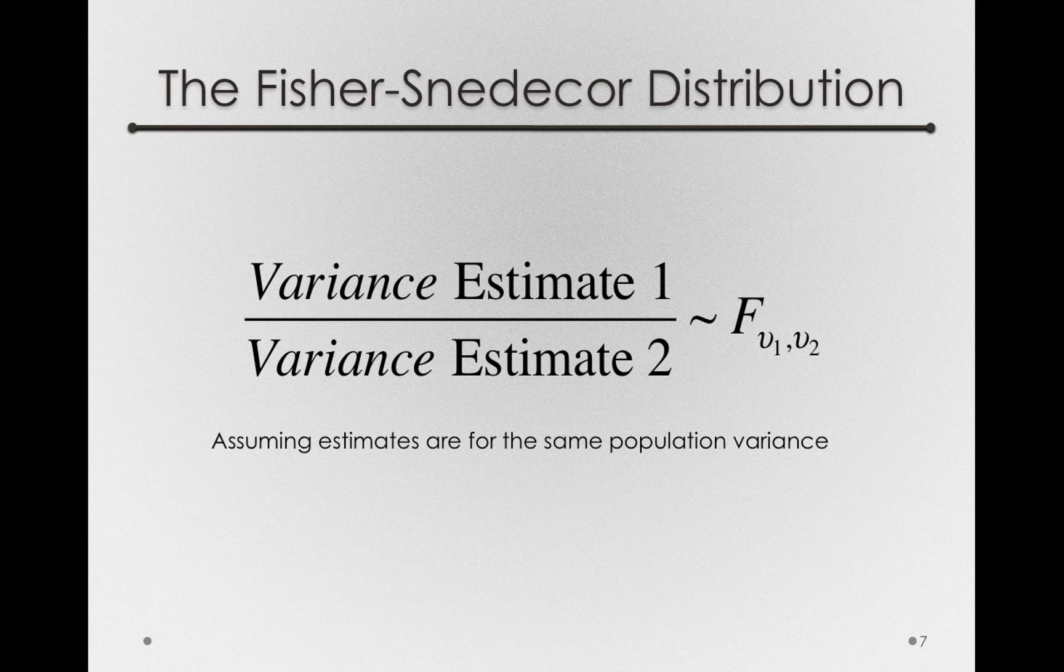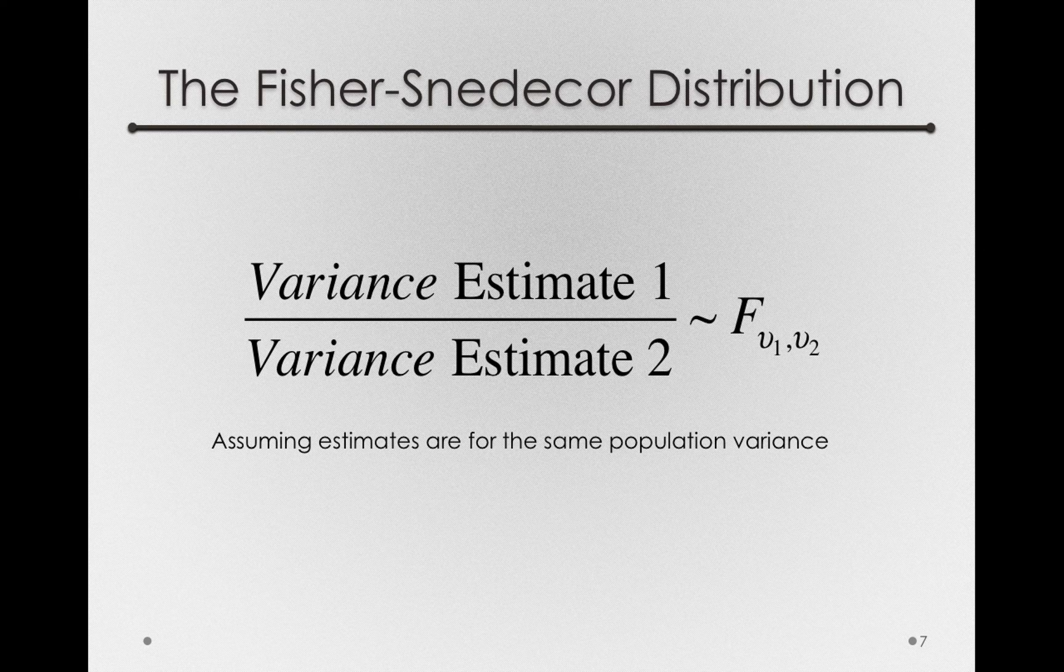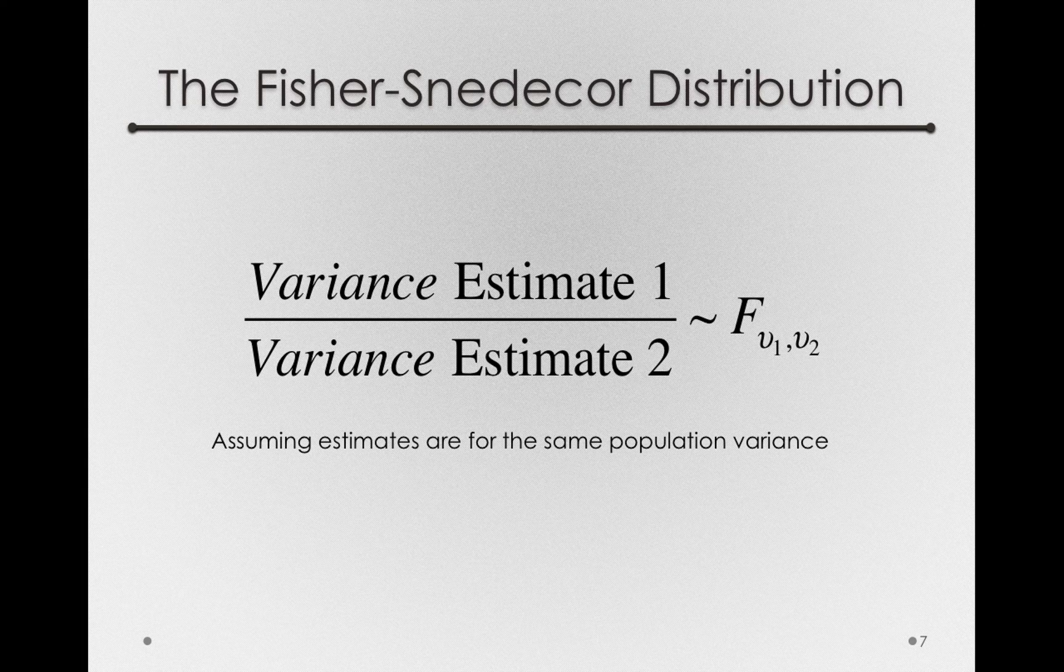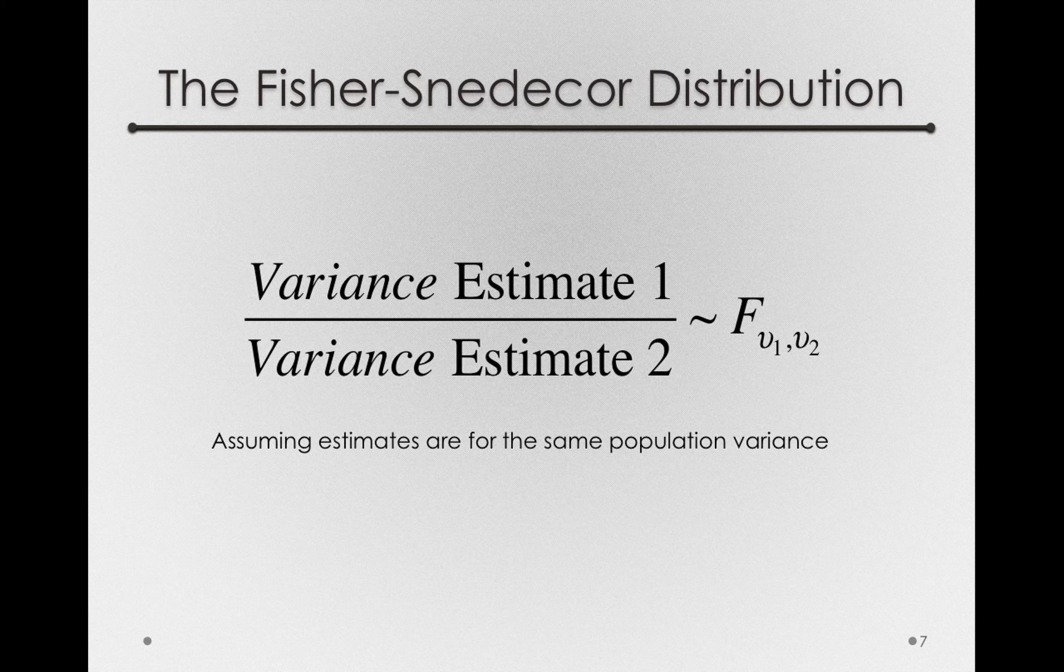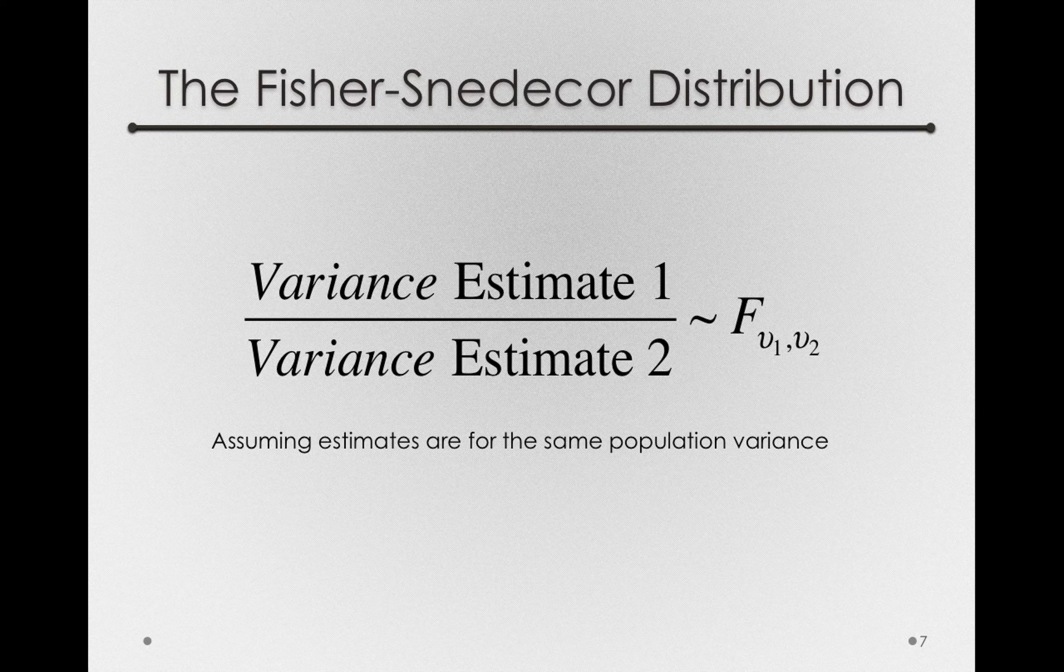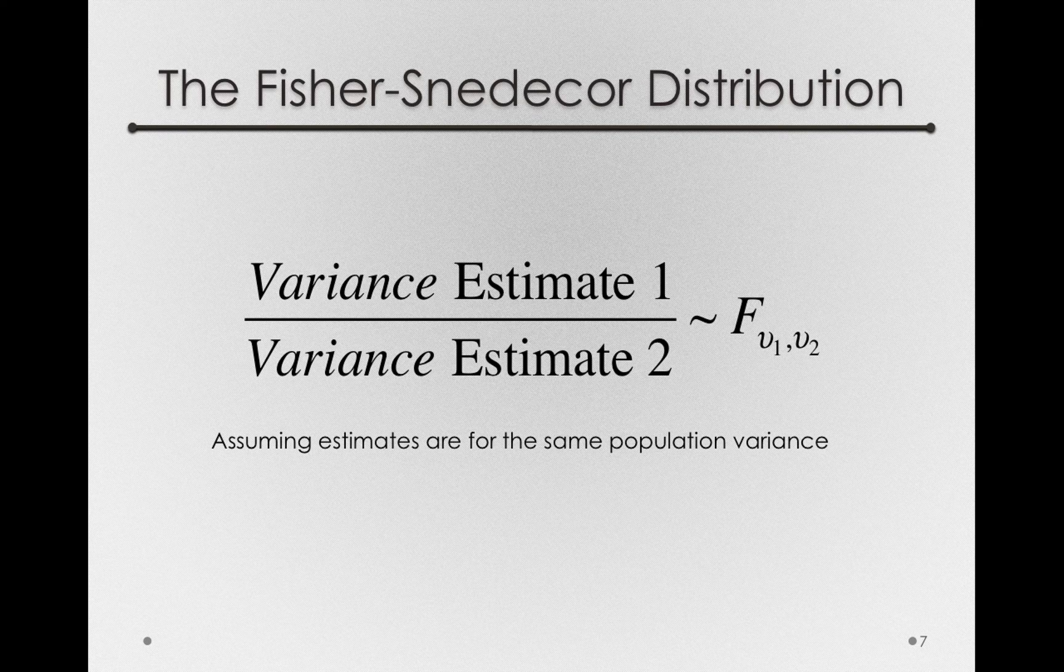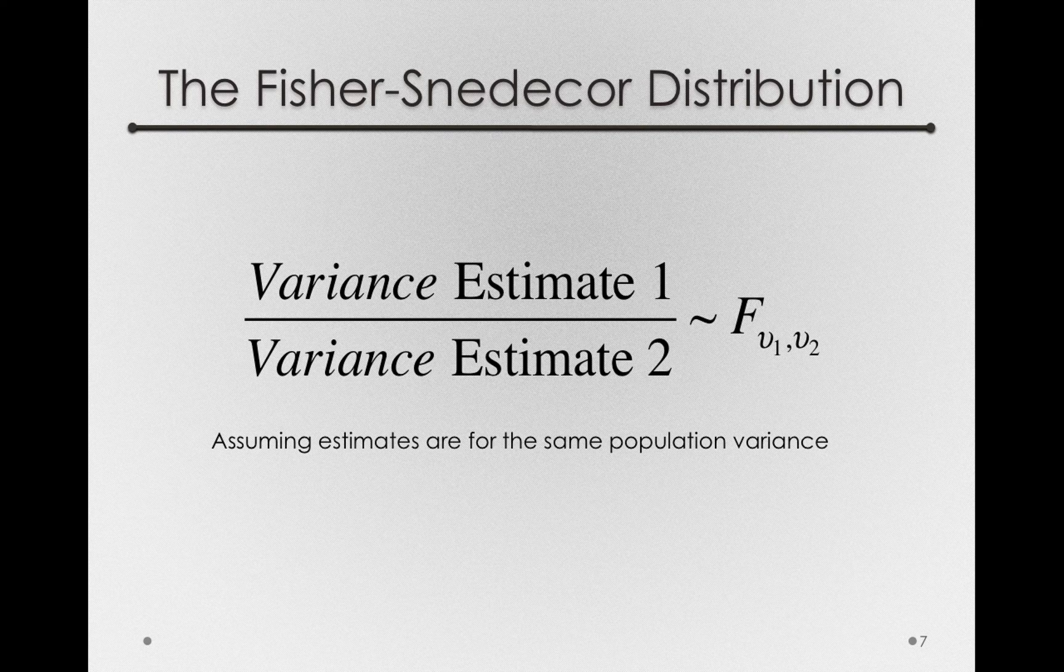Now what Fischer and Snedecor both found was that when you take the ratio of two variance estimates, two estimates that are trying to estimate the same population variance, the distribution of those estimates follows a specific function which we know as the F or the Fischer-Snedecor. Now just a little bit on notation.